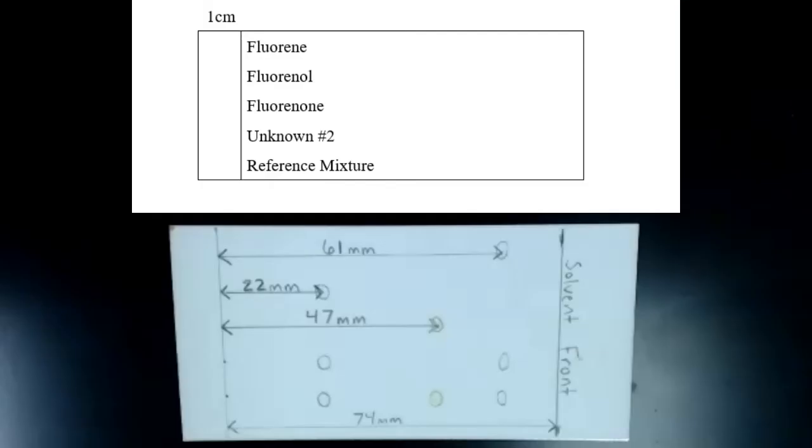This is our fully developed TLC plate. You can now calculate the RF values for each of our three compounds. You can also identify the compound or compounds that were in our unknown mixture. This concludes Part A of this experiment.